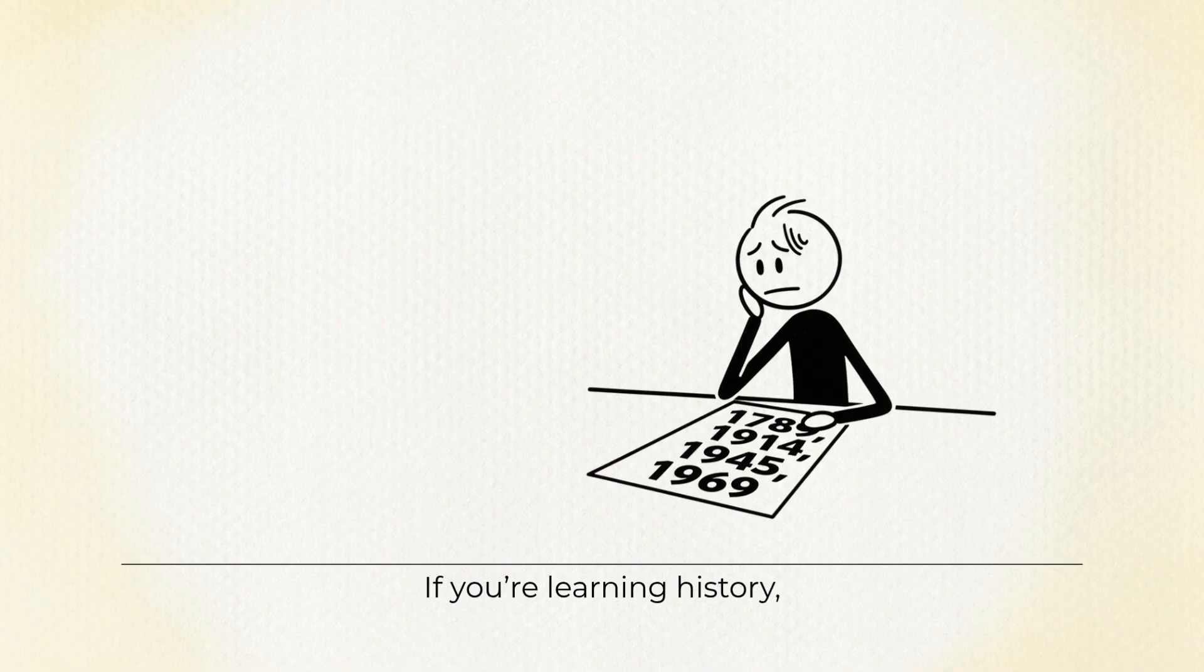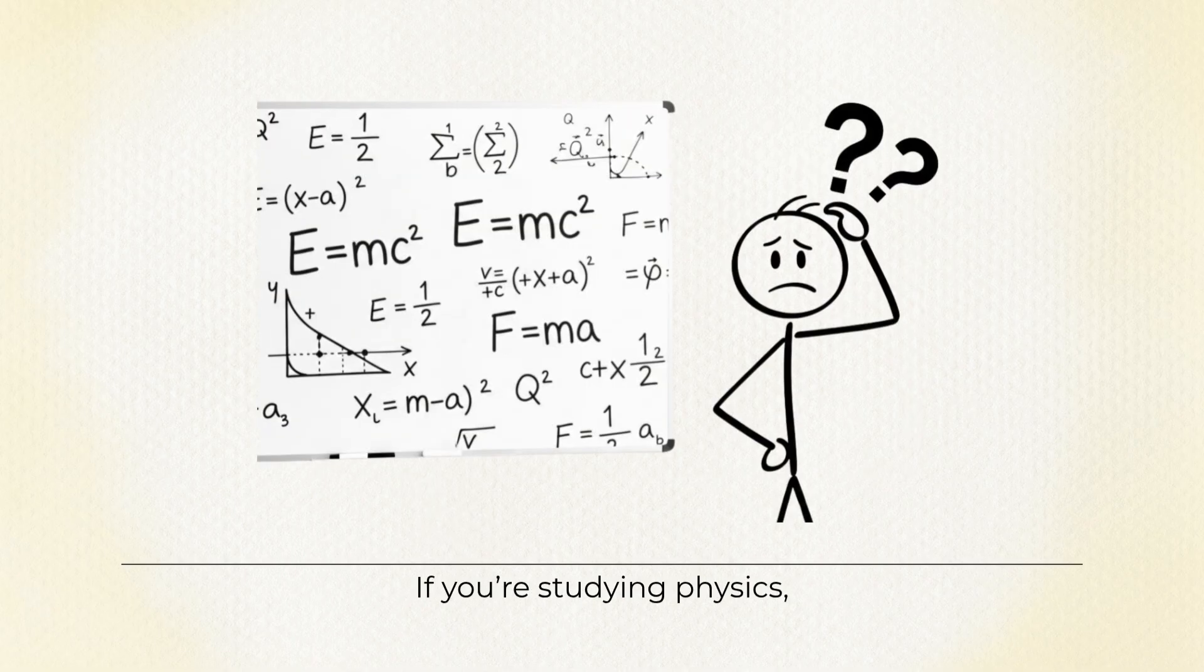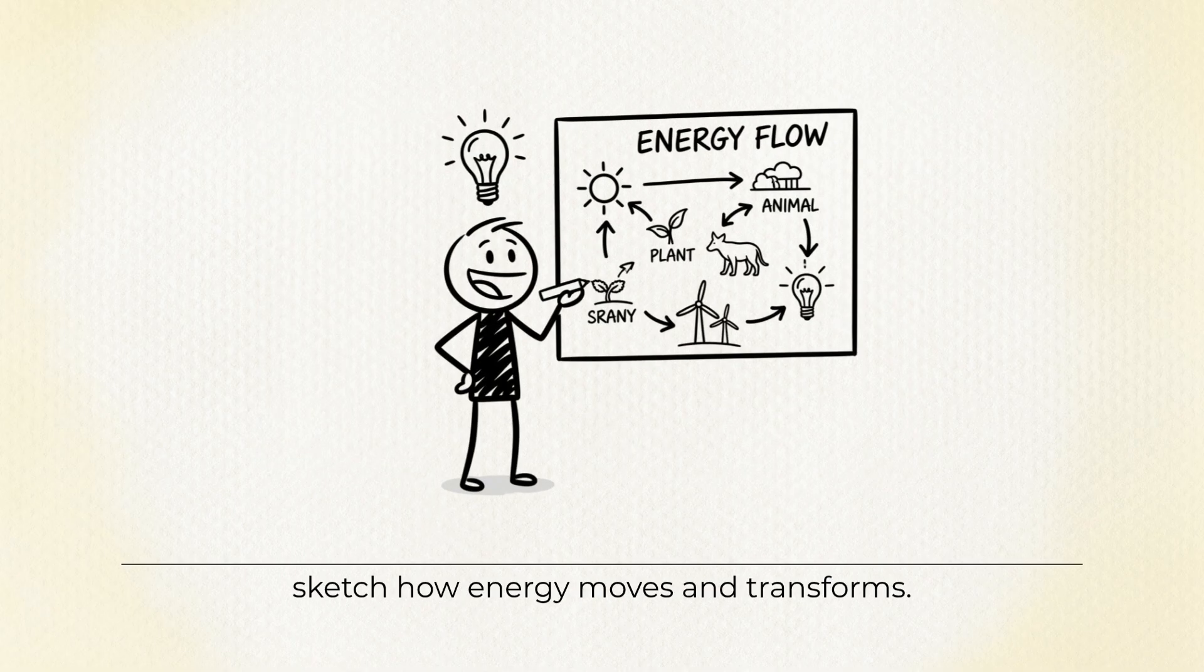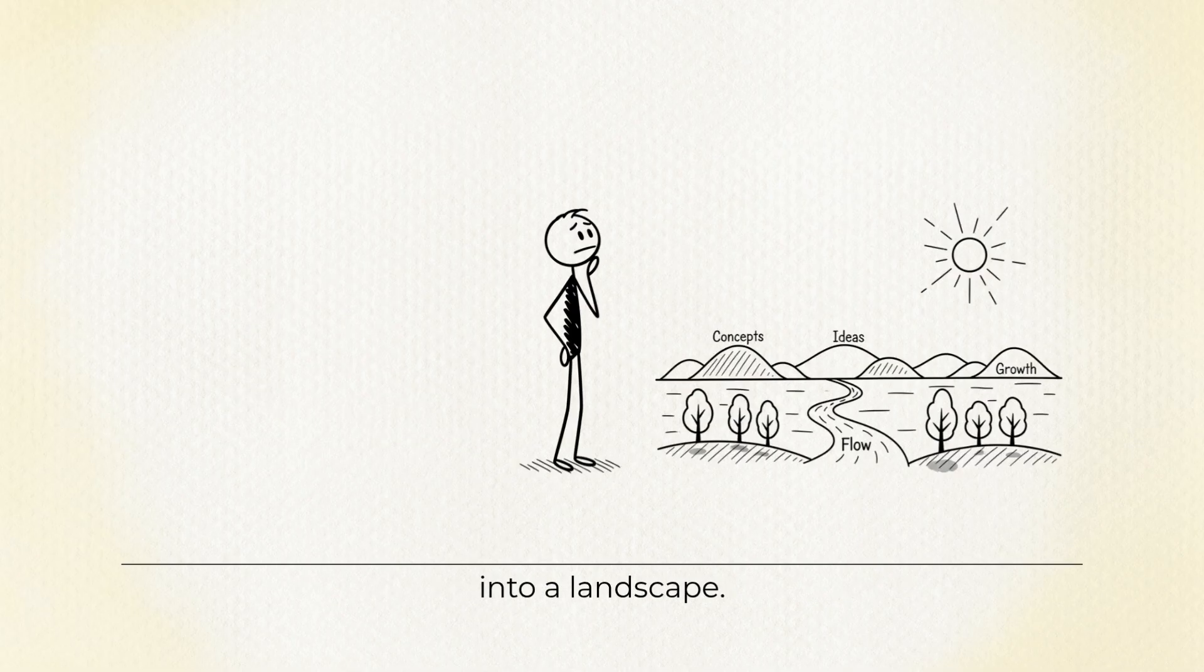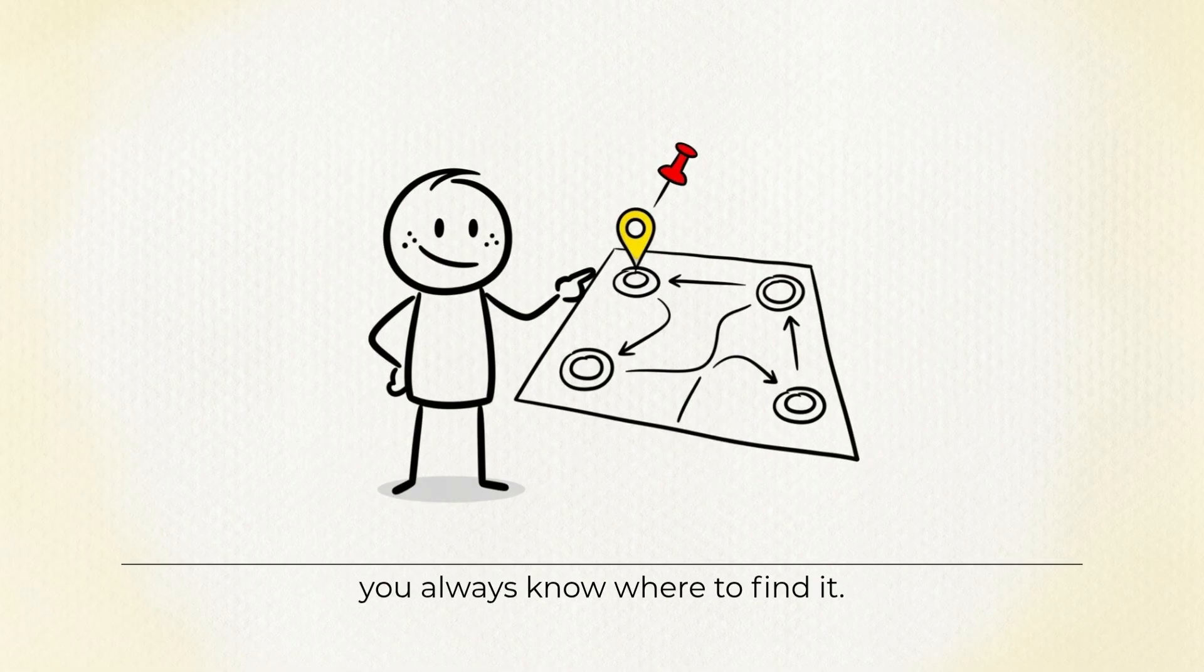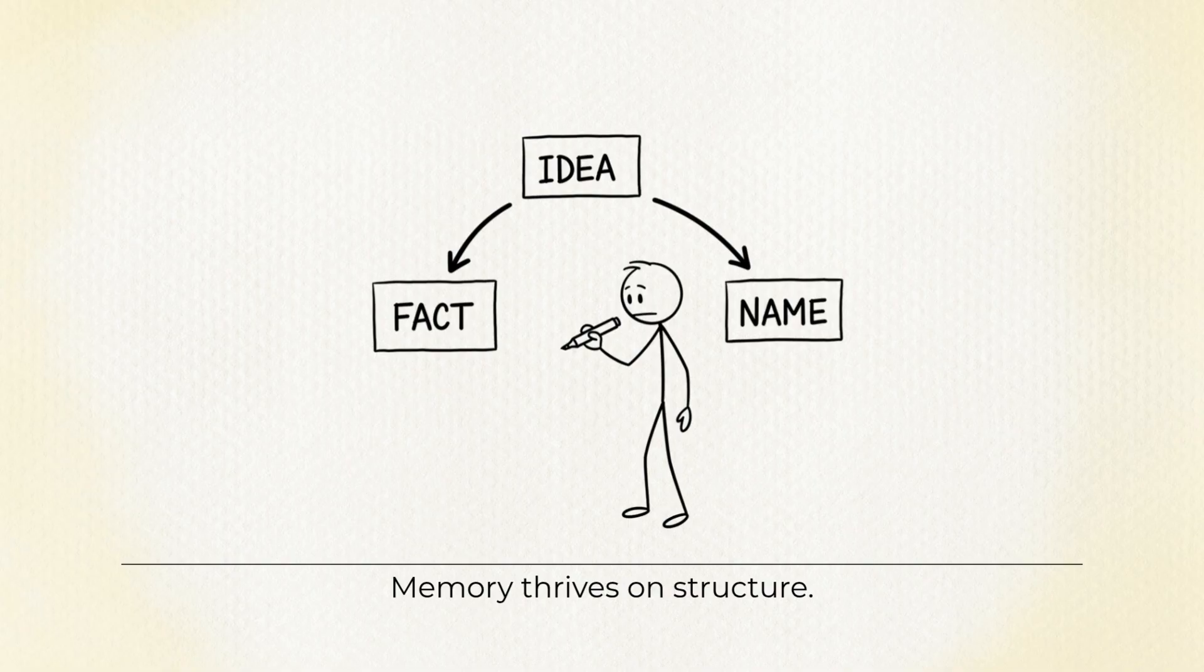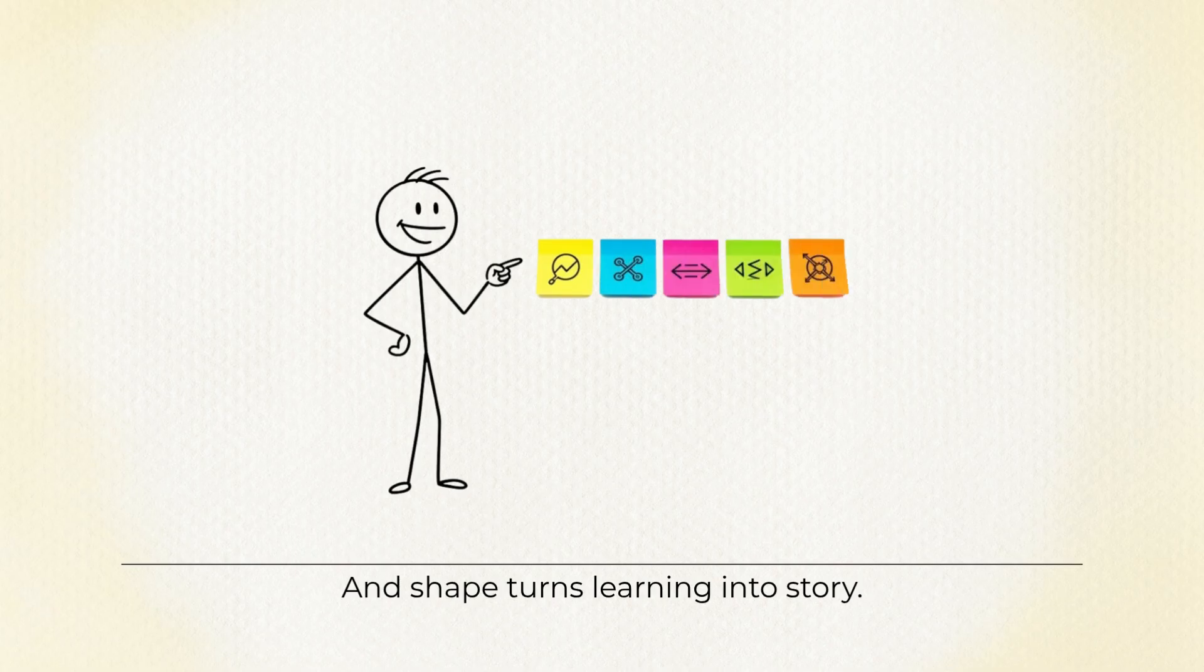If you're learning history, don't memorize dates, map the sequence of events. If you're studying physics, sketch how energy moves and transforms. Visual learning turns information into a landscape. And when knowledge becomes a map, you always know where to find it. Memory thrives on structure. Images give it shape, and shape turns learning into story.